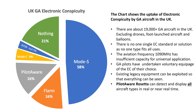The attached chart shows the usage of electronic conspicuity devices by GA aircraft in the UK. There are approximately 19,500 airframes in the UK excluding foot-launched aircraft and balloons. As can be seen, the majority of aircraft have Mode S installed, followed by FLARM, PilotAware, Mode C and then ADS-B. This results in about 20% of all airframes having no electronic conspicuity at all.